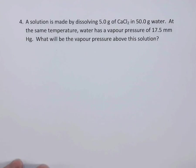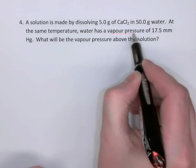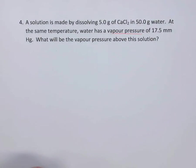So question number four. A solution is made by dissolving 5 grams of calcium chloride in 50 grams of water. At the same temperature, water has a vapor pressure, so that phrase vapor pressure jumps out at me, of 17.5 mmHg. What would be the vapor pressure above this solution?